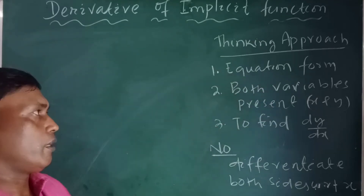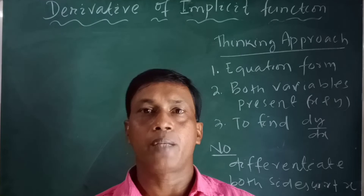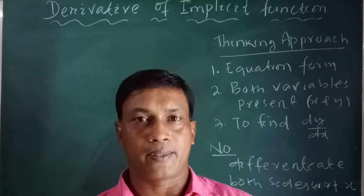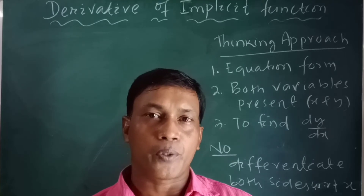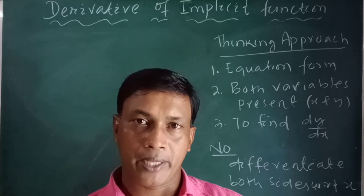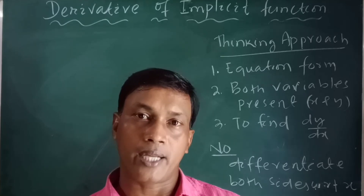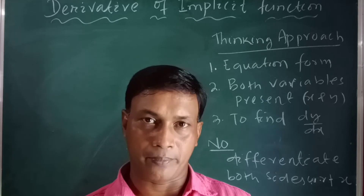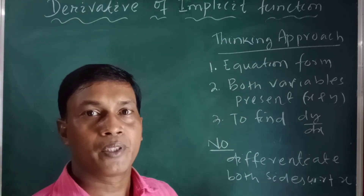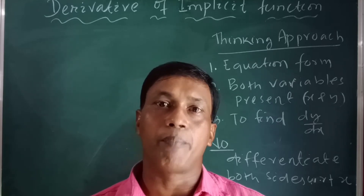An implicit function will be in the form of an equation, with both variables x and y present. The question will ask you to find dy by dx. So the three conditions are: first, it is in equation form; second, both variables are present; and third, you need to find dy by dx. The only trick to differentiate an implicit function is to differentiate both sides with respect to x.